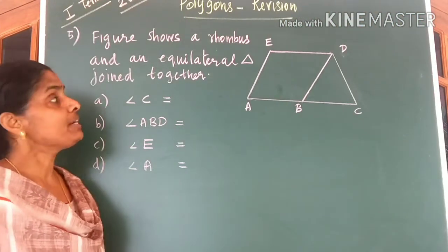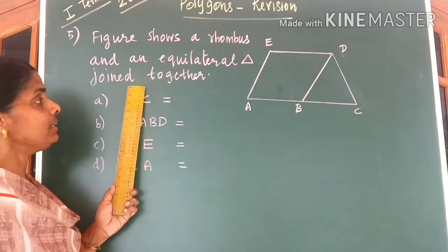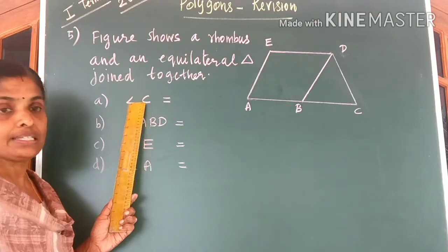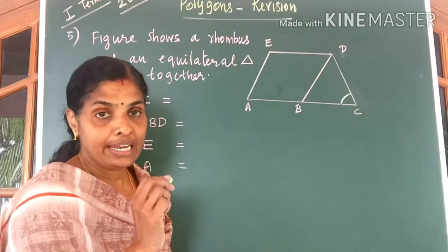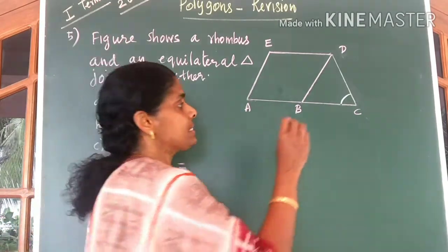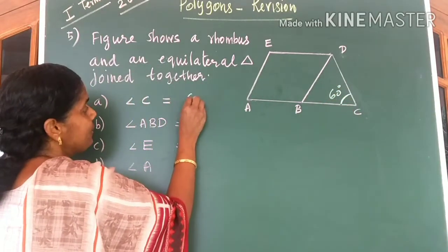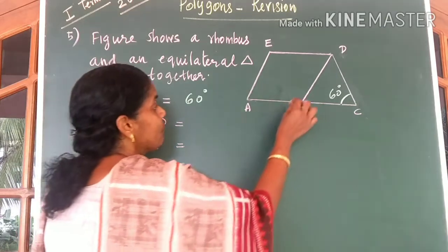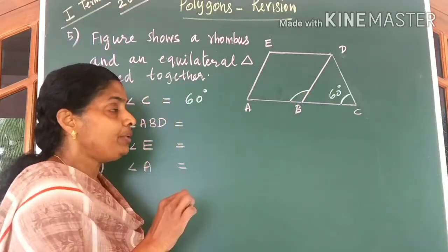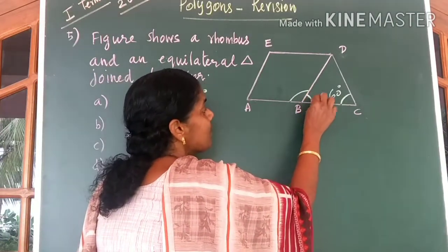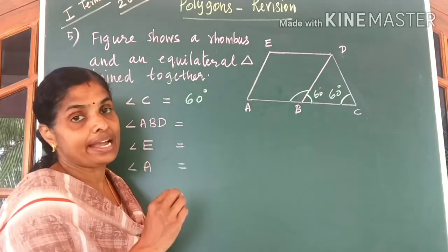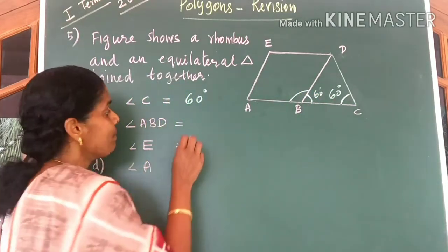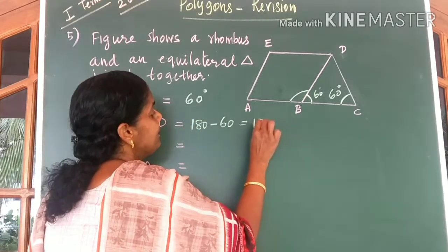Come to the next question. The figure shows a rhombus and an equilateral triangle joined together, with 4 sub-questions. Question A: angle C. Since BBC is an equilateral triangle, each angle equals 60 degrees, so angle C is equal to 60 degrees. Question B: find angle ABD. This angle in the equilateral triangle is 60 degrees, and all 3 angles are equal, so angle ABD is equal to 180 minus 60 degrees, which gives you 120 degrees.